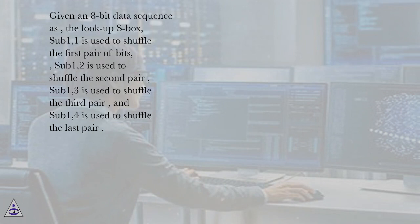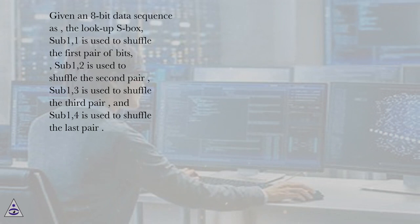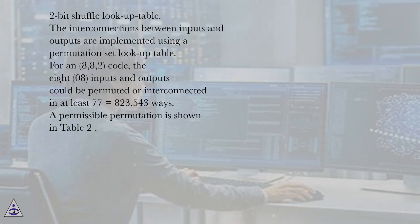Given an 8-bit data sequence, the lookup S-box sub1,1 is used to shuffle the first pair of bits; sub1,2 is used to shuffle the second pair; sub1,3 is used to shuffle the third pair; and sub1,4 is used to shuffle the last pair. This is shown in the 2-bit shuffle lookup table.